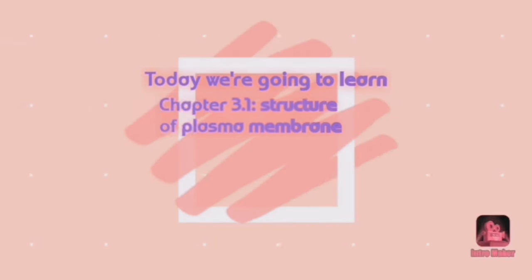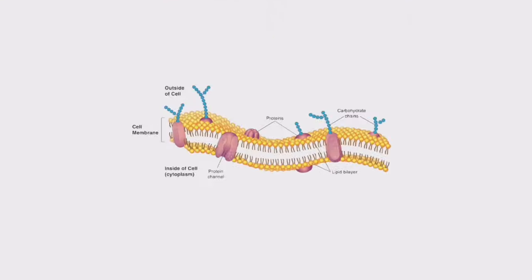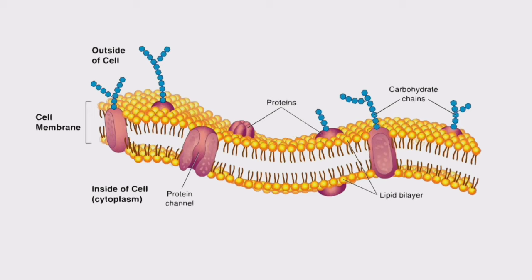This video covers Chapter 3.1 and 3.2. Living cells need substances from the external environment to carry out living processes, and cells must allow some substances to move in and out. The movement of substances is regulated by the plasma membrane, which separates the living cell from its environment. The plasma membrane contains glycolipids, channel proteins, glycoproteins, carrier proteins, and cholesterol.